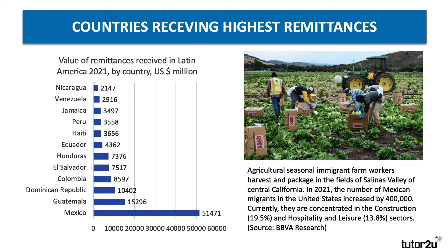If we think about remittances, here's a good example — Latin America. Mexico is way out ahead as the country in Latin America receiving the biggest inflows of remittances each year: fifty-one billion dollars. Our picture here shows agricultural seasonal farm workers in California. In 2021, nearly half a million extra Mexican migrants were in the United States, typically concentrated in construction, hospitality and leisure, as well as farming, and much of that income is sent back to Mexico.